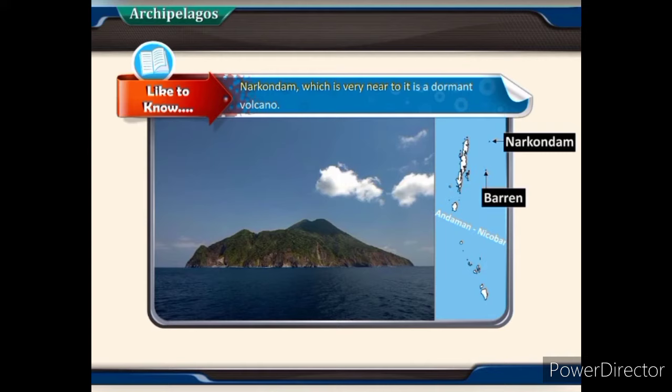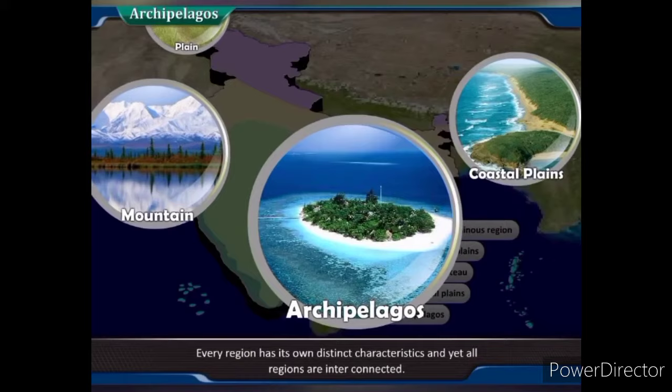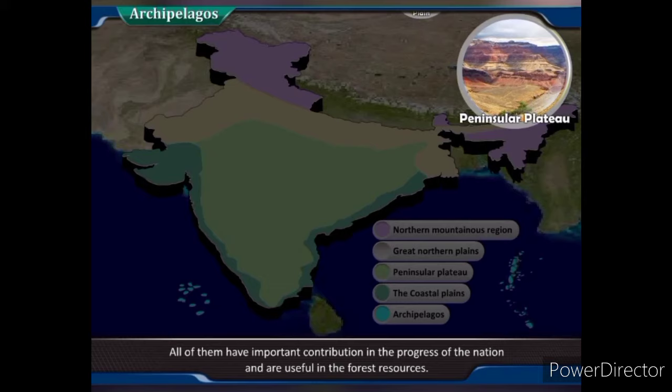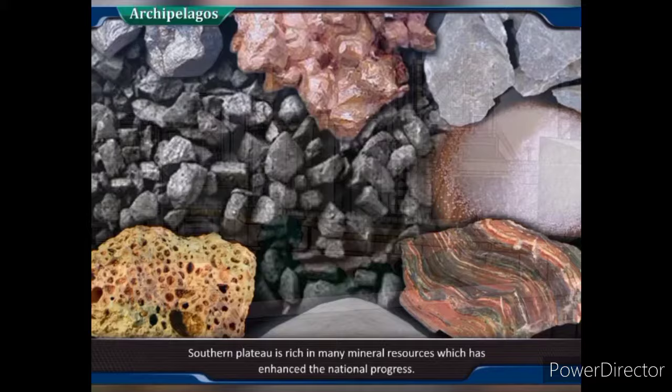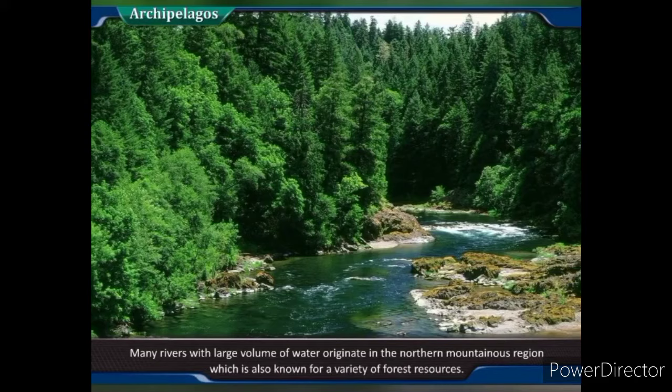Some of the Andaman and Nicobar islands are formed due to volcanic activity. The only active volcano in India is Barren Island in the Andaman and Nicobar archipelago; Narcondam, which is very near to it, is a dormant volcano. There is a great diversity in the physical features of India — every region has its own distinct characteristics and yet all regions are interconnected, each contributing to the nation's progress in forest resources, agriculture and minerals.